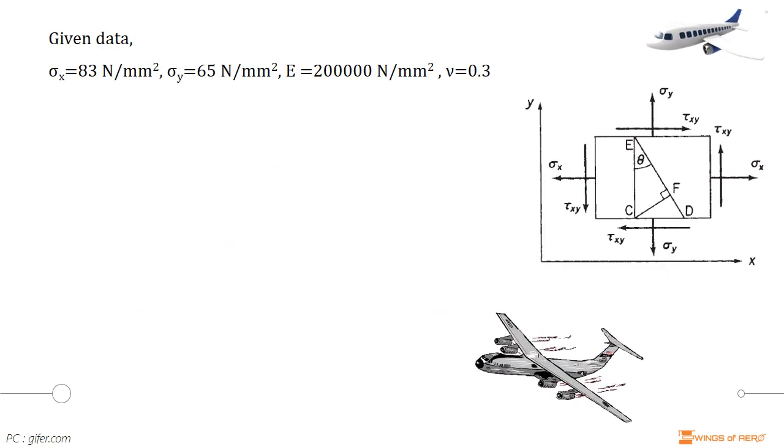Here, we consider the rectangular element. Let me write the given data. Tensile stress in x direction, sigma x is equal to 83 N per mm square and tensile stress in y direction, sigma y is equal to 65 N per mm square. Modulus of Elasticity or Young's modulus E is equal to 200,000 N per mm square and Poisson's ratio nu is equal to 0.3.